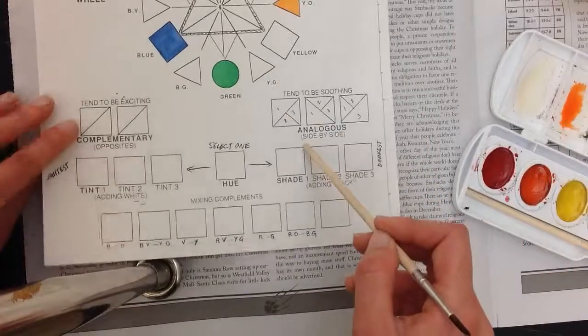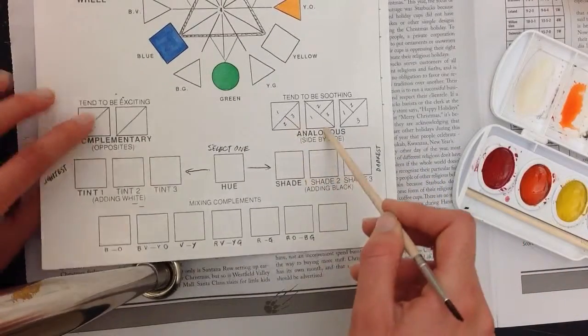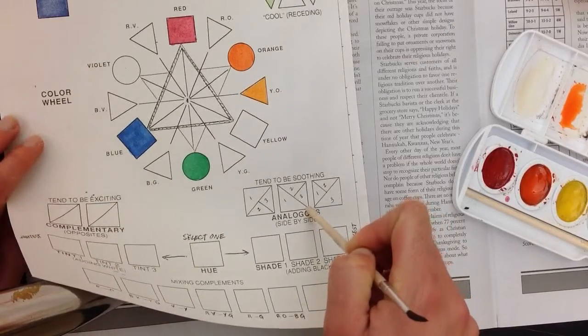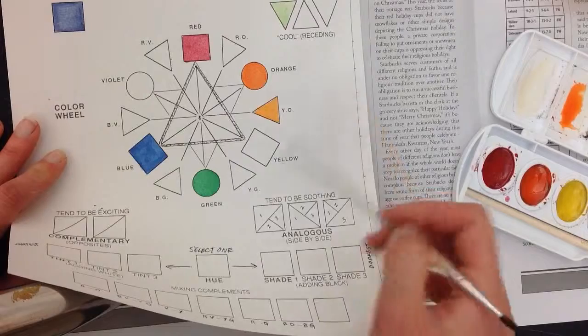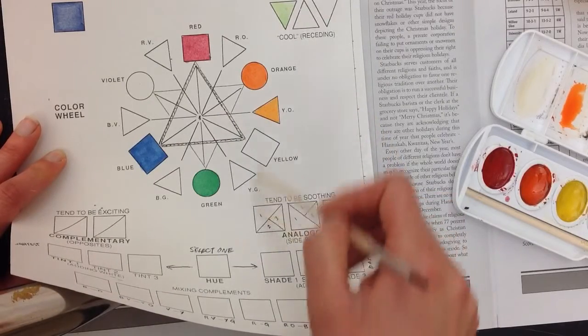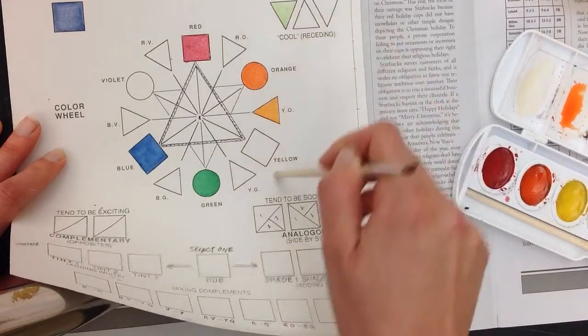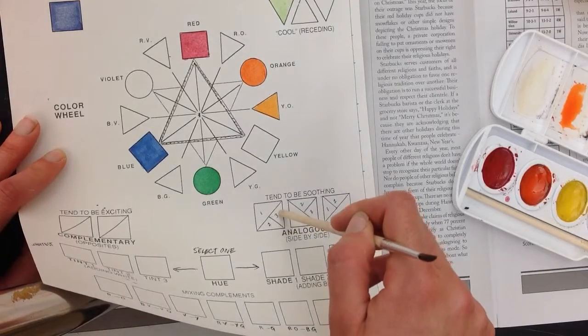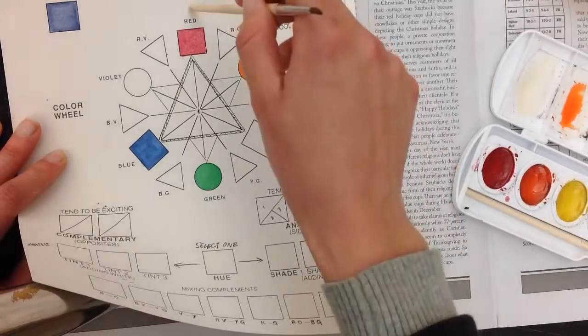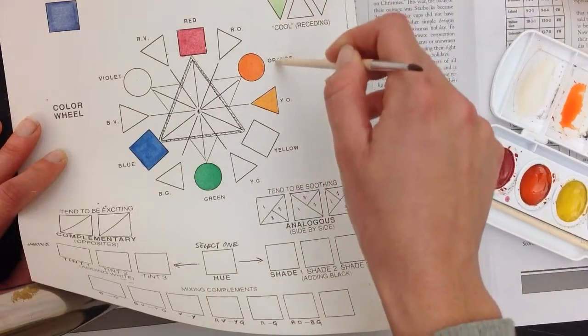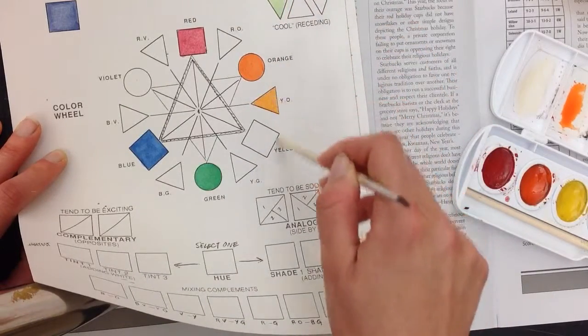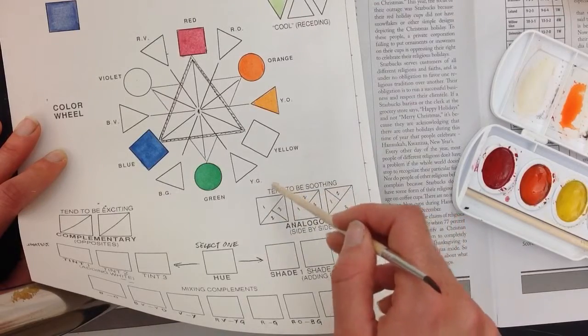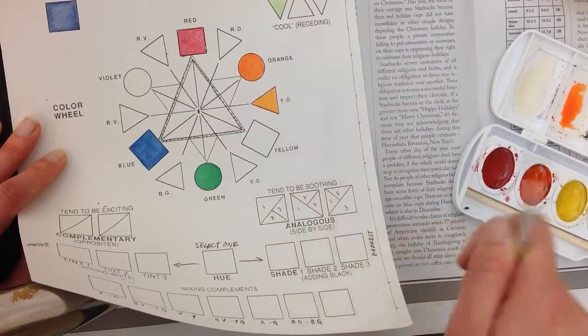Then we have analogous colors, which are colors that are side by side. They sit right next to each other on the color wheel. Now let me show you a mistake that students make. They want to do analogous colors and they go, okay, red, orange, and yellow. And they put in like red, orange, and yellow. Well, those aren't exactly side by side. It would be better to do red, red-orange, and orange. Or orange, yellow-orange, and yellow. They should be sitting right next to each other. So show me three sets of analogous colors. Colors that sit right next to each other side by side. All right.